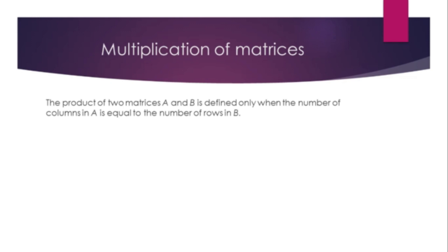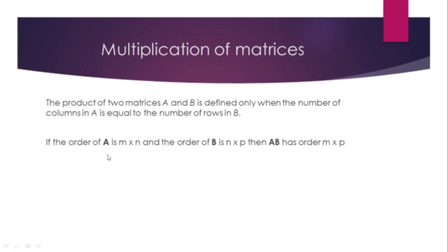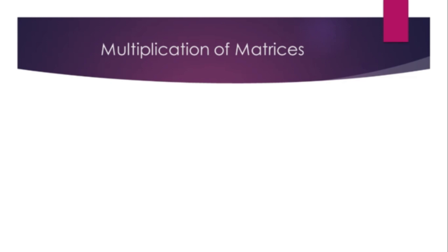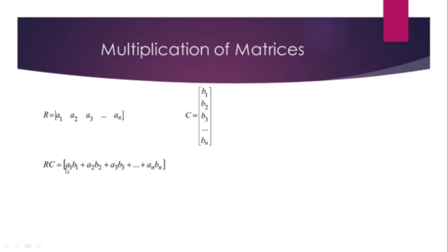Matrix Multiplication: The product of two matrices A and B is defined only when the number of columns in A equals the number of rows in B. If A is m by n and B is n by p, then AB has order m by p. A row and a column must have the same number of entries to be multiplied: RC = a1b1 + a2b2 + a3b3 + ... + anbn.